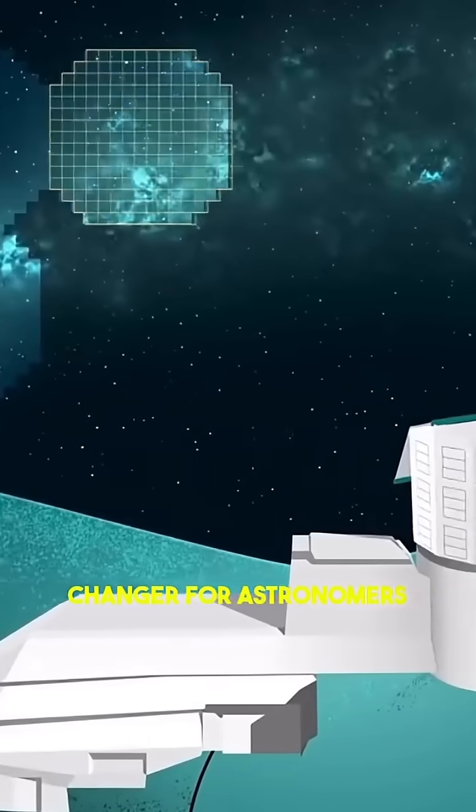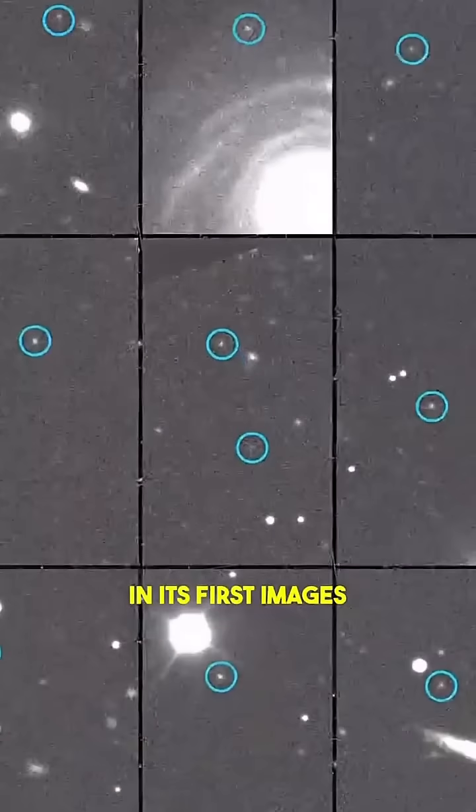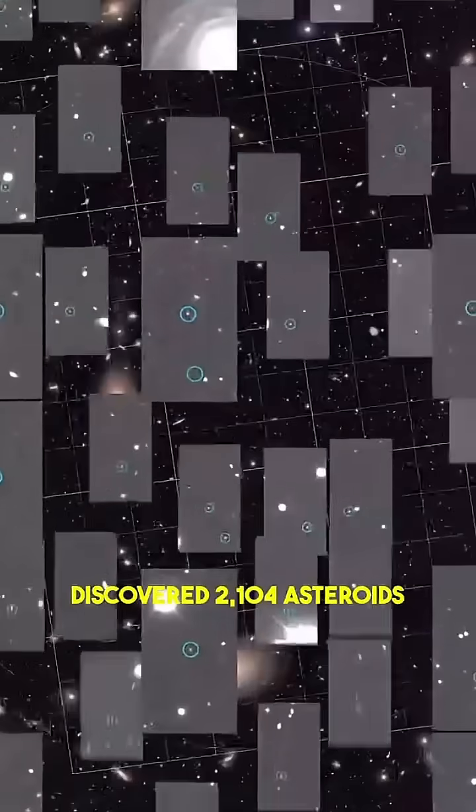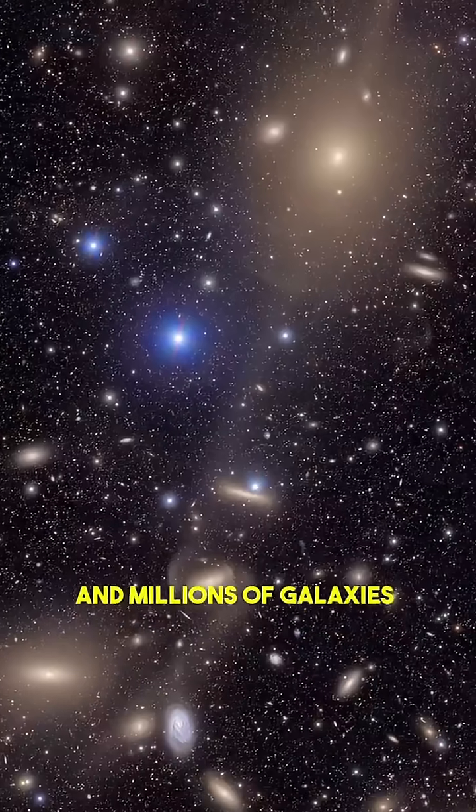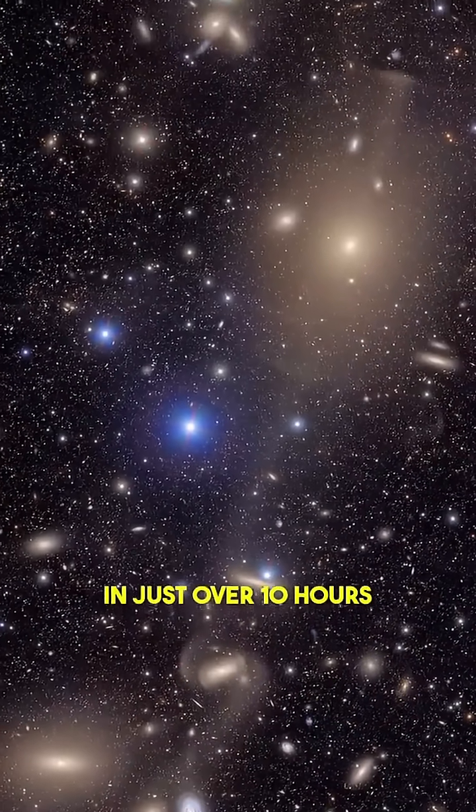In its first images, the observatory discovered 2,104 asteroids, including near-Earth objects, and millions of galaxies in just over 10 hours.